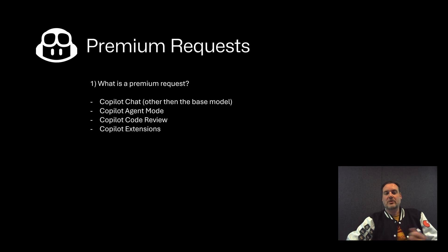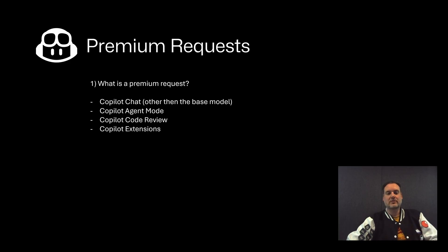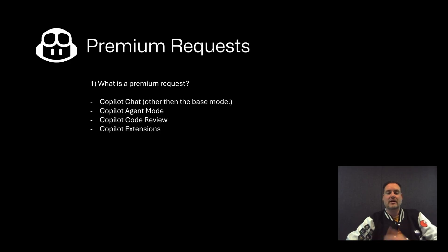If you run a GitHub Copilot code review, it will automatically look at your pull request changes and do the first review round. That is also part of a premium request — the single moment you click 'run this code review for me,' that is one premium request. Even Copilot extensions — like pulling things in from Datadog or Docker Hub from the extensions marketplace — every conversation with that extension counts as a premium request.